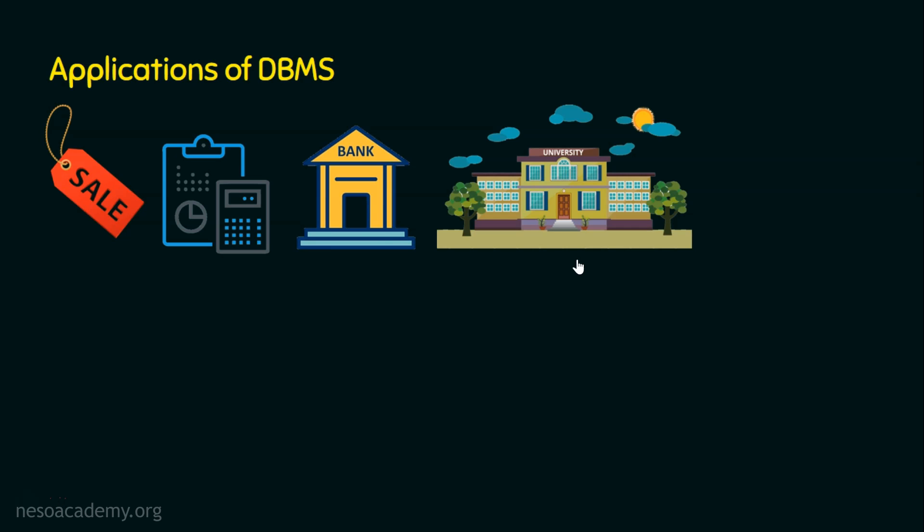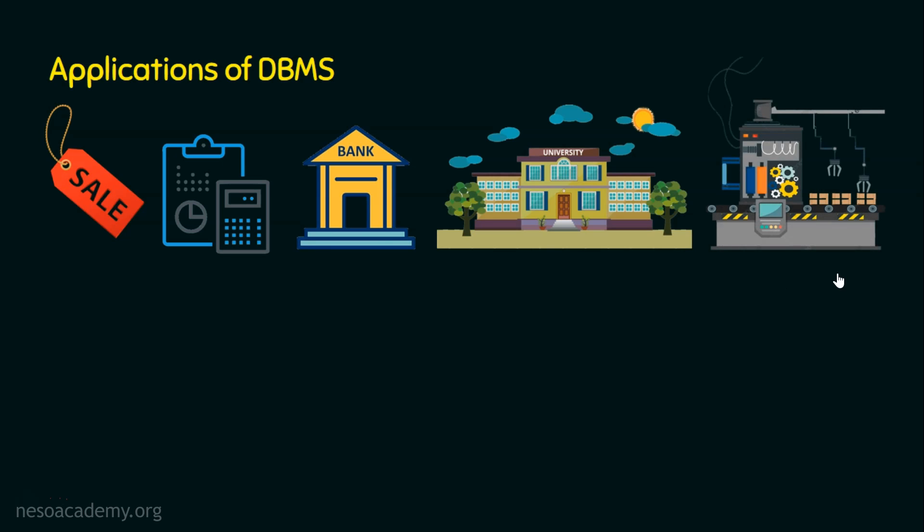Coming to the next application area, which is manufacturing. Supply chain management is an essential part of any manufacturing organization because they need to maintain details of the production of items, inventories in the warehouse, store and order information, customers' information, purchase information, and sales information. So manufacturing is the next application area of database management systems.